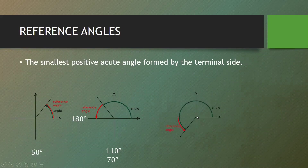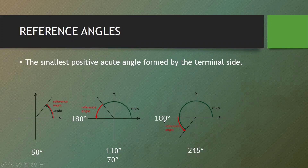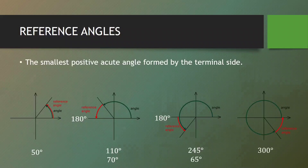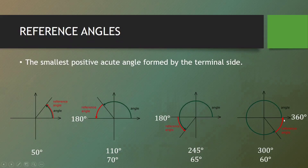For an angle of 245 degrees, the reference angle is the distance away from the x-axis. To get the reference angle, we subtract 180 degrees from 245 degrees, which gives us a reference angle of 65 degrees. For an angle of 300 degrees, since one revolution equals 360 degrees, we compute 360 minus 300, giving us a reference angle of 60 degrees.